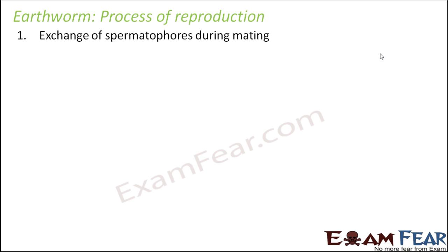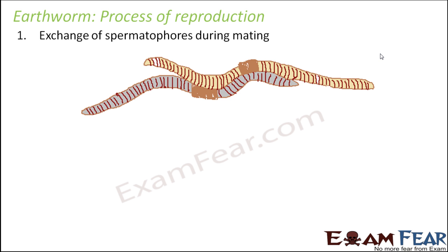The first step in reproduction is the exchange of spermatophores during mating. Mating happens between two earthworms just to exchange their packets of sperms. A spermatophore is a packet containing the sperms. Here you can see one earthworm and another earthworm — the dark colored structure represents the clitellum.